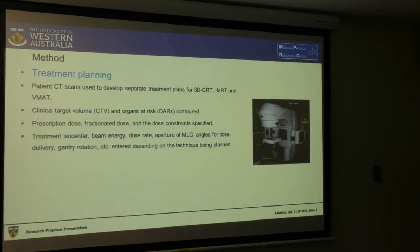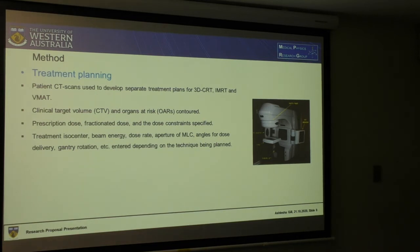Next is treatment planning, which would start with using patient CT scans to develop separate 3D CRT, IMRT, and VMAT plans. We need to highlight CTV and OARs, specify the prescription dose, fractionated dose, and dose constraints. We will also specify the isocenter, beam energy, and other parameters like aperture, angle of delivery, and gantry rotation, depending on the technique.